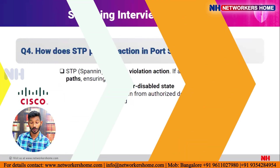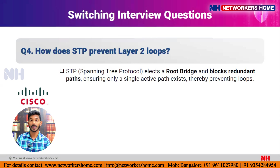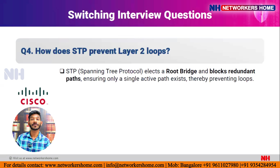Question four: how does STP prevent Layer 2 loops? STP elects a root bridge and blocks redundant paths, ensuring only a single active path exists, thereby preventing loops. When a frame keeps circulating within a topology due to alternative paths, a loop is created. STP elects a root bridge and blocks the alternative paths so frames stop circulating.